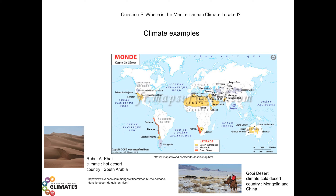Here is the Rub' al-Khali desert, also called the Empty Quarter in South Arabia. It is a hot desert where temperatures can reach or exceed 50 degrees Celsius during the summer, but also descend under 0 degrees Celsius in winter. The Gobi desert is in turn a cold desert, located in Mongolia and China. Its maximum temperatures can exceed 30 degrees Celsius during the day in summer, and its minimum temperatures can go below minus 40 degrees Celsius.